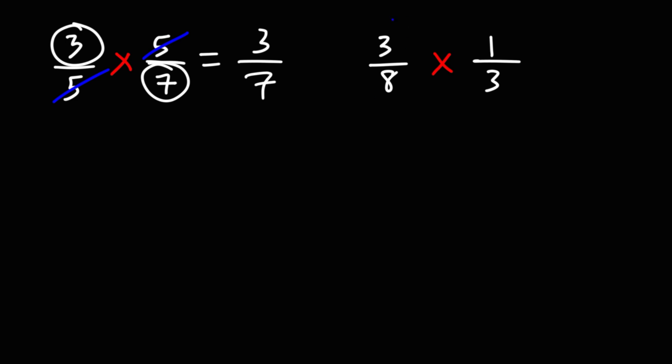For the next example, notice that we could cancel a 3. And so what we'll be left with is 1 over 8.